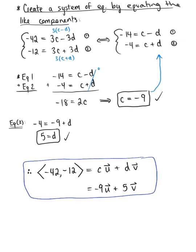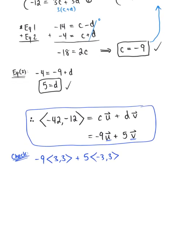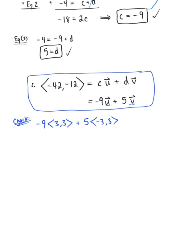And you can always check your work here by plugging the original vectors back in to make sure you get minus 42 minus 12. So let's double check. So plugging in vector u, we have negative 9 multiplied by the vector 3, 3 plus 5 multiplied by that vector v, which has components negative 3, positive 3. And let's give ourselves just a tiny bit more room here so we can see better.